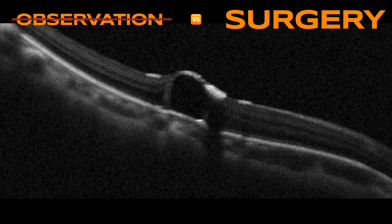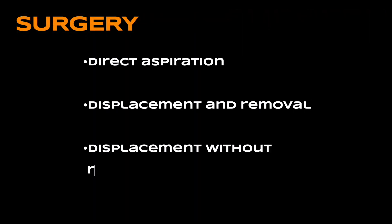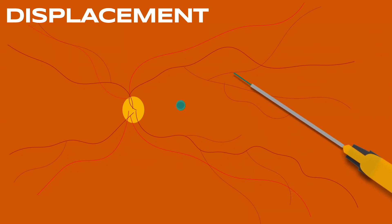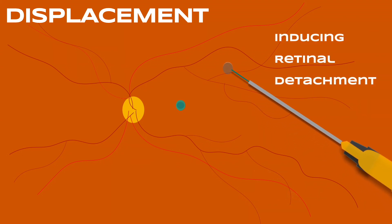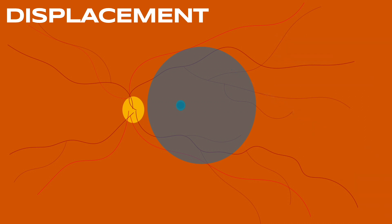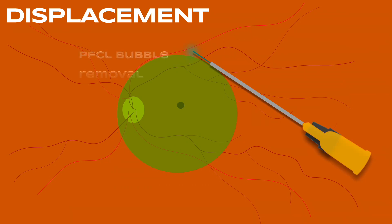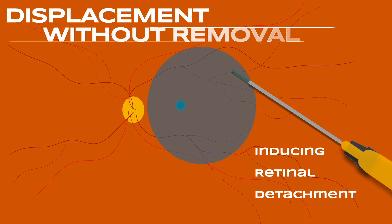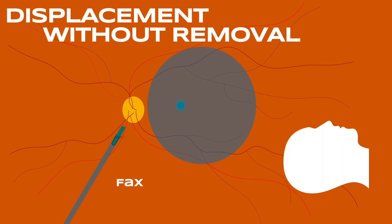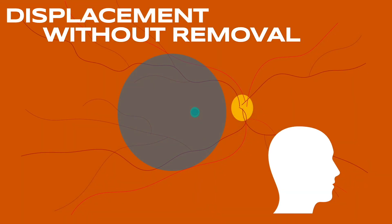A new surgery was indicated for the removal of the subfoveal perfluorocarbon four weeks after the first procedure. Various techniques have been described for this approach. In one of them, it is possible to induce macular retinal detachment by injecting BSS with a 38-gauge cannula, displacing the perfluorocarbon bubble inferiorly. Some surgeons place perfluorocarbon on the macula to push the bubble to the periphery and perform a retinotomy near the vascular arcades to aspirate the bubble intraoperatively. Other surgeons prefer to perform a fluid-air exchange and leave the patient in an elevated head position of about 45 degrees in the early postoperative days, allowing the retina to reattach in the macular region and the subretinal perfluorocarbon bubble to be retained outside the central vision.